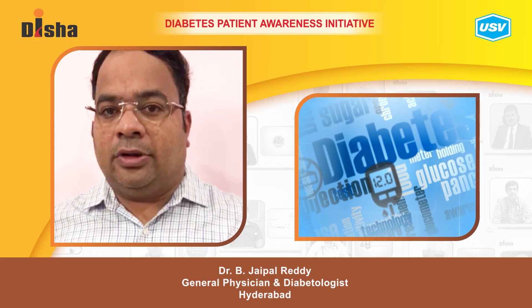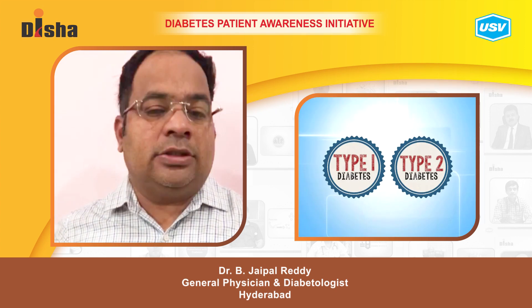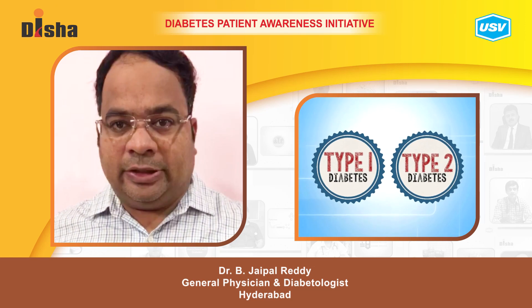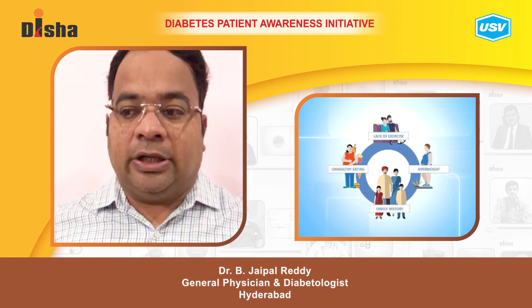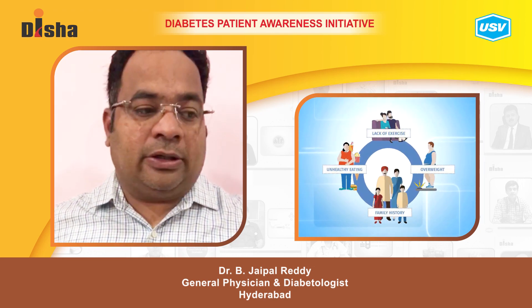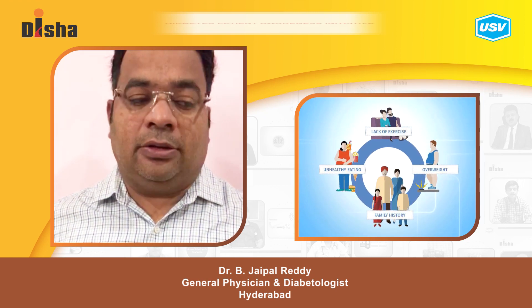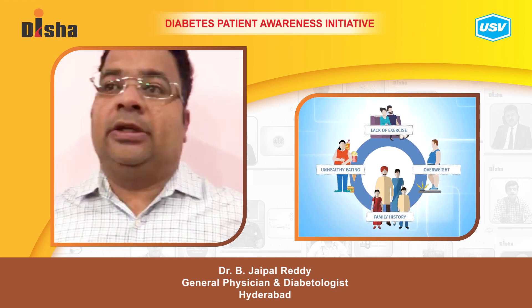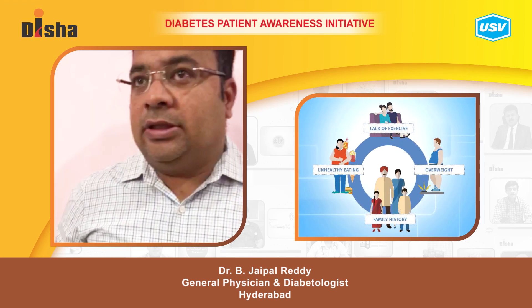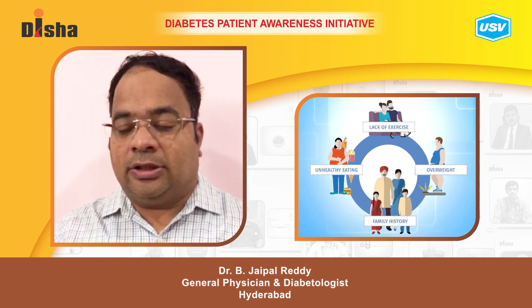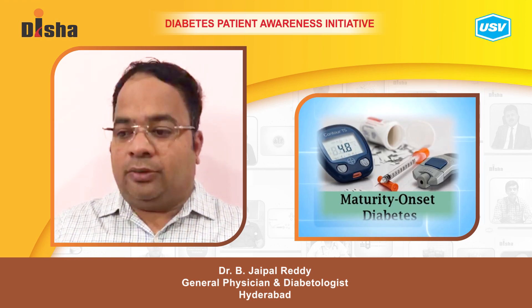Now today we are going to discuss whether diabetes is inevitable or not. Type 1 and type 2 diabetes are multifactorial diseases, because there is an interplay between genetic factors, lifestyle, and diet, leading to a multifactorial pathogenesis. That is why they are not directly inherited.